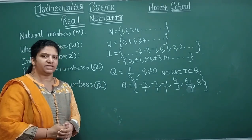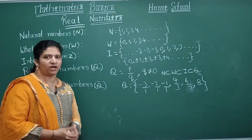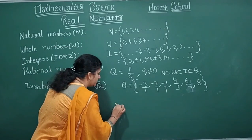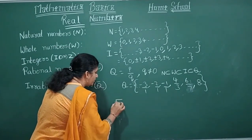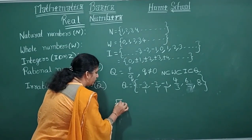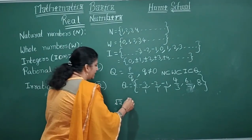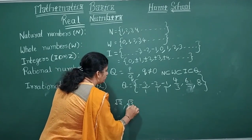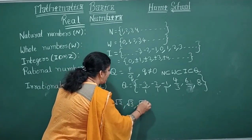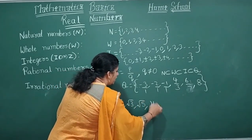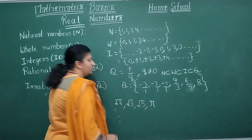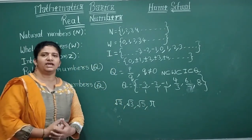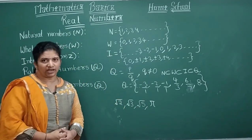Where do we see irrational numbers? These appear with a square root — for example, √2, √3, √5, √7. These are all called irrational numbers.